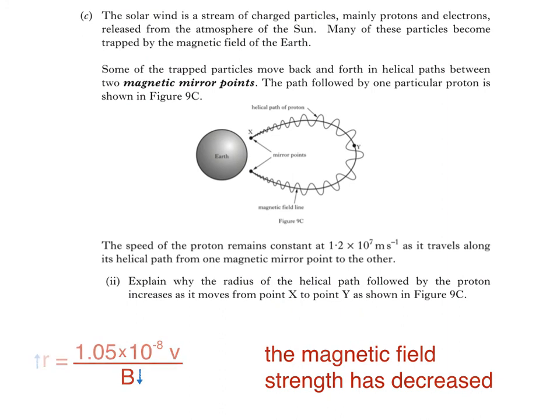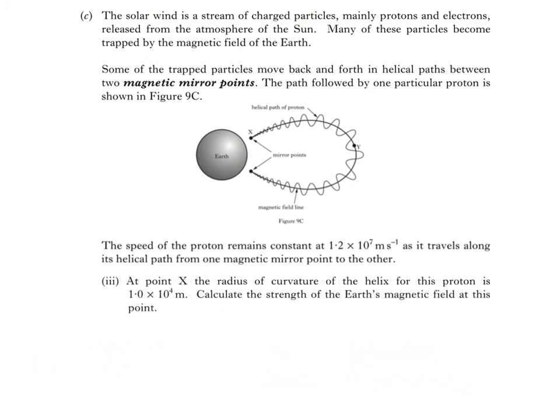Finally, here's part 3 of the question. At point X, the radius of curvature of the helix for this proton is 1 times 10 to the power of 4 meters. Calculate the strength of the Earth's magnetic field at this point. Again, we're back to using this equation, although we'll rearrange it to make B the subject.